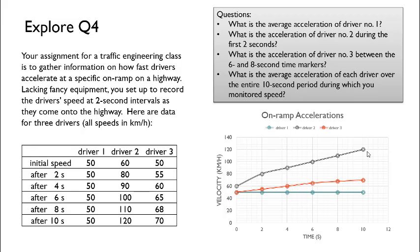Driver one is at 50 kilometers per hour when he starts out. After two seconds, no change. Four, six, eight, and ten, all 50 kilometers per hour. Let's move over to driver two. Her initial speed is 60 kilometers per hour, and then after two seconds is 80 kilometers per hour. Four seconds is 90 kilometers per hour, six seconds is 100 kilometers per hour, 110 at eight seconds and 120 at 10 seconds.